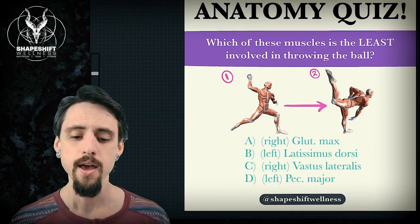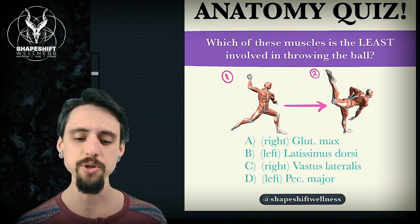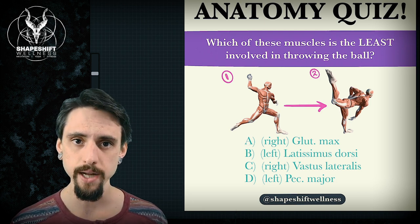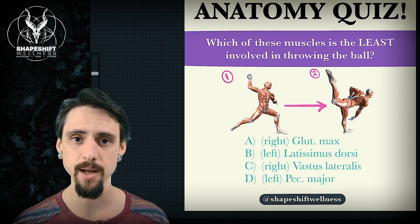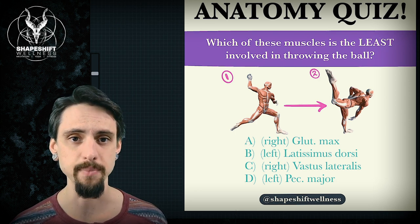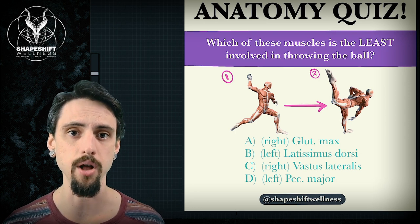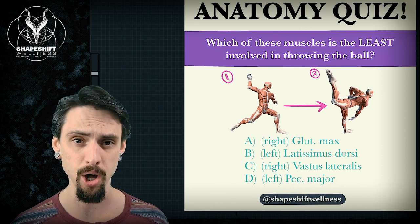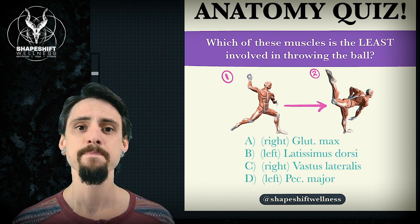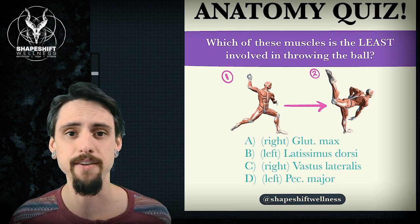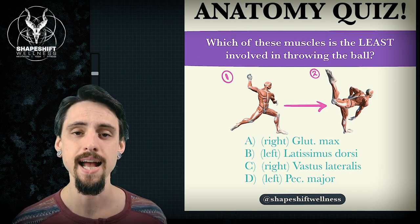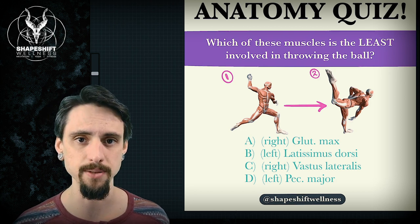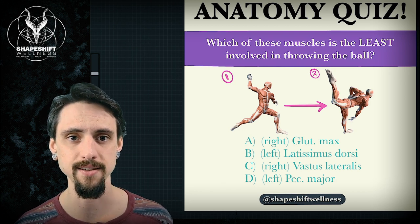Here we are. The quiz asks us, which of these muscles is the least involved in throwing the ball? Real quick, before I get into that, when I was coming up with this quiz, I tried to think of muscles that were not involved in throwing a ball. And the fact is that a complex motion like pitching a baseball at top speed involves basically every single muscle in your body. I could make an argument that any single muscle anywhere at all in your body is actually working in some capacity.